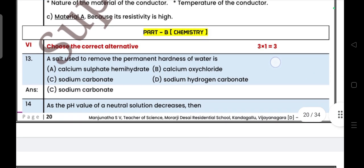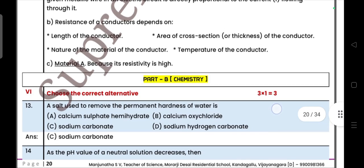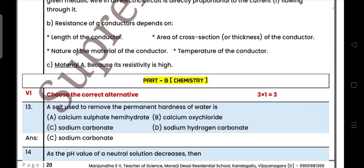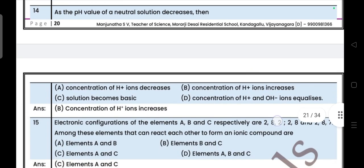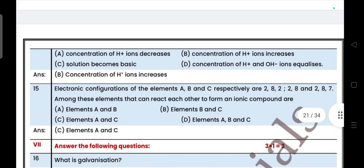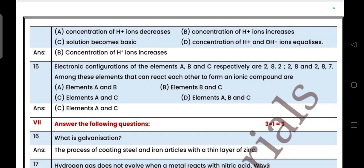That is part A, physics part. Now come to chemistry part, part B. Three multiple choice questions. Salt used to remove the permanent hardness of water, answer is sodium carbonate. As pH value of neutral solution decreases, then answer is B, concentration of H+ ion increases. Electronic configuration of elements A, B, C respectively is 2,8,2 and 2,8,2 and 2,8,7. Among these elements that can react with each other to form ionic compounds are A and C.